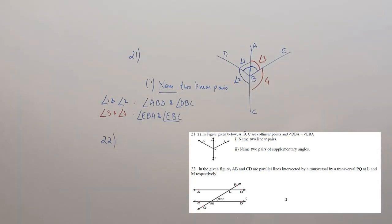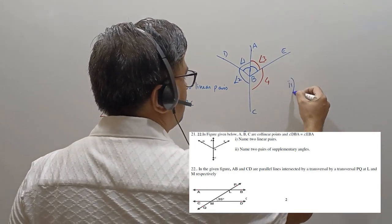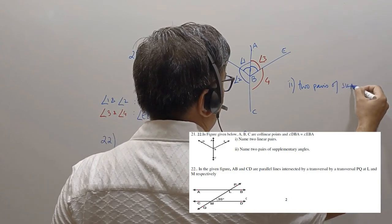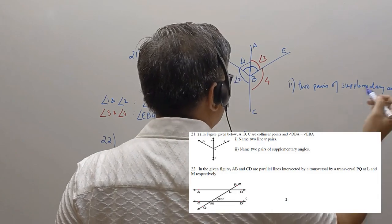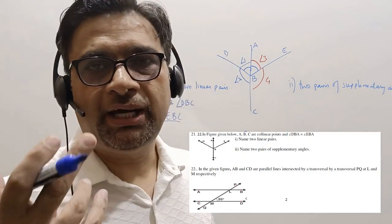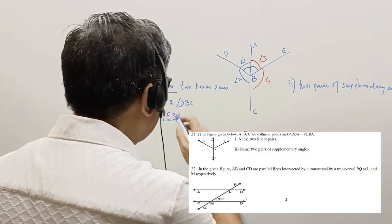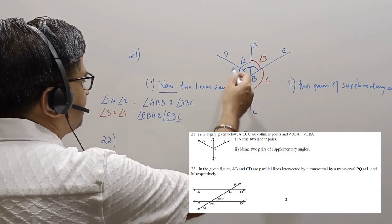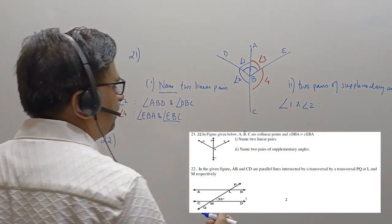The second part of the question asks us to name two pairs of supplementary angles. Supplementary angles are two angles which add to 180 degrees. We see that angle 1 and angle 2 is one pair of supplementary angles. Again, angle 1 and angle 2 — they form supplementary angles.